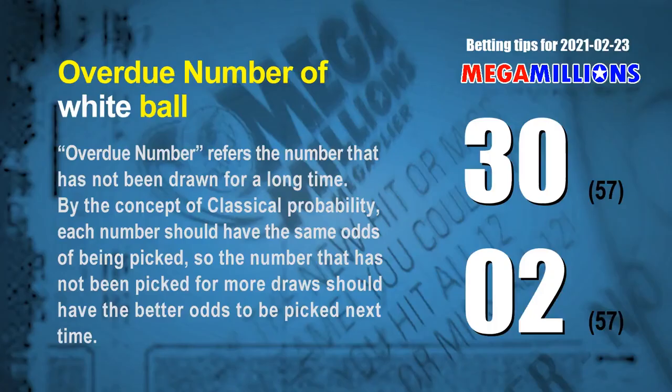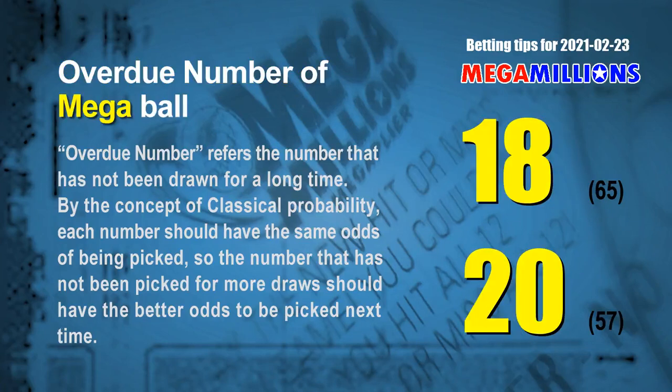The final information is overdue numbers. An overdue number refers to a number that has not been drawn for a long time. By the concept of classical probability, the number not picked for more draws should have better odds to be picked next time. The two most overdue white balls are 30 and 02 — both have not been drawn for 57 draws. The two most overdue Mega Balls are 18 and 20 — Mega Ball 18 has not been drawn for 65 draws, and Mega Ball 20 has not been drawn for 57 draws.